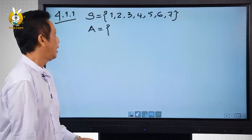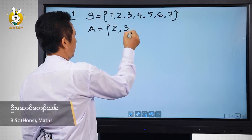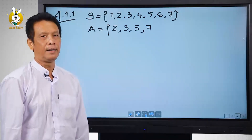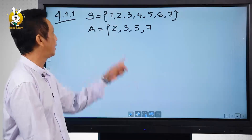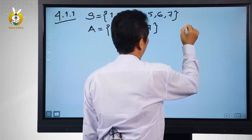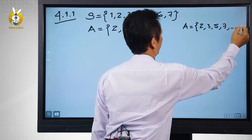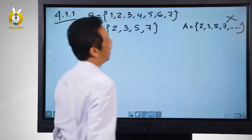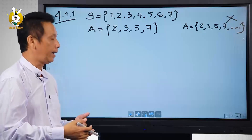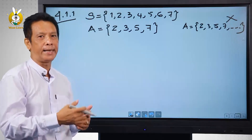Now, if you want to see the difference between 2, 3, 5, and 7, you can see the difference between 2, 3, 5, and 7. The difference between 2, 4, 5, and 7 — you can see the difference between 3, 5, and 6. And that one is 4, 5, and 6.